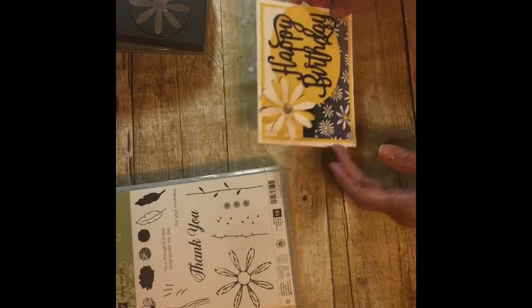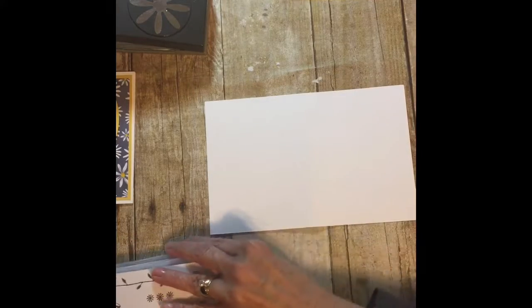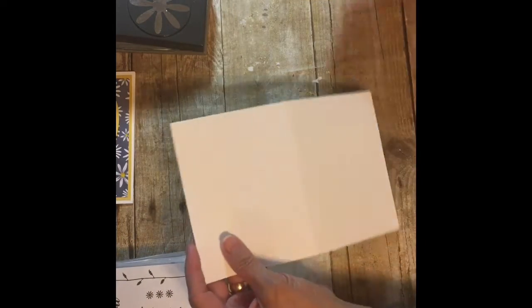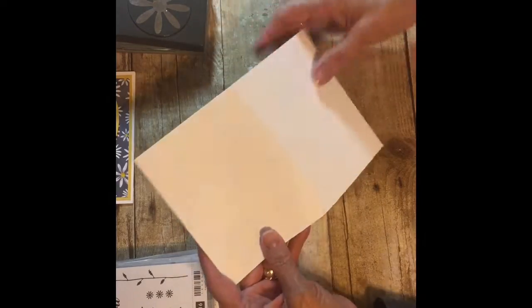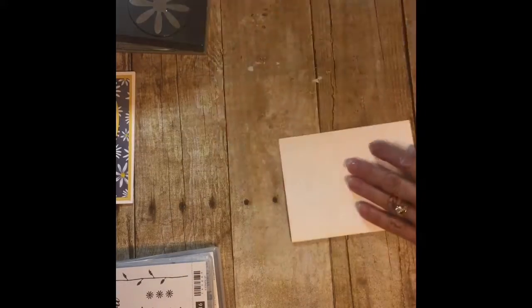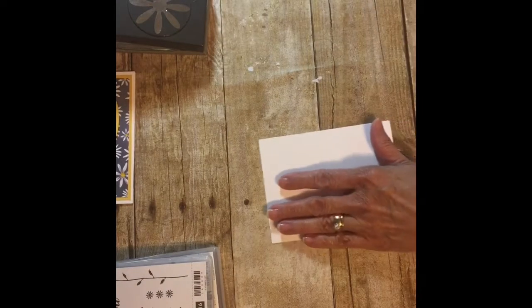So let's get started. Here are all my supplies. This is the regular cardstock, the Whisper White, and it's eight and a half by five and a half, scored at four and a quarter and folded.